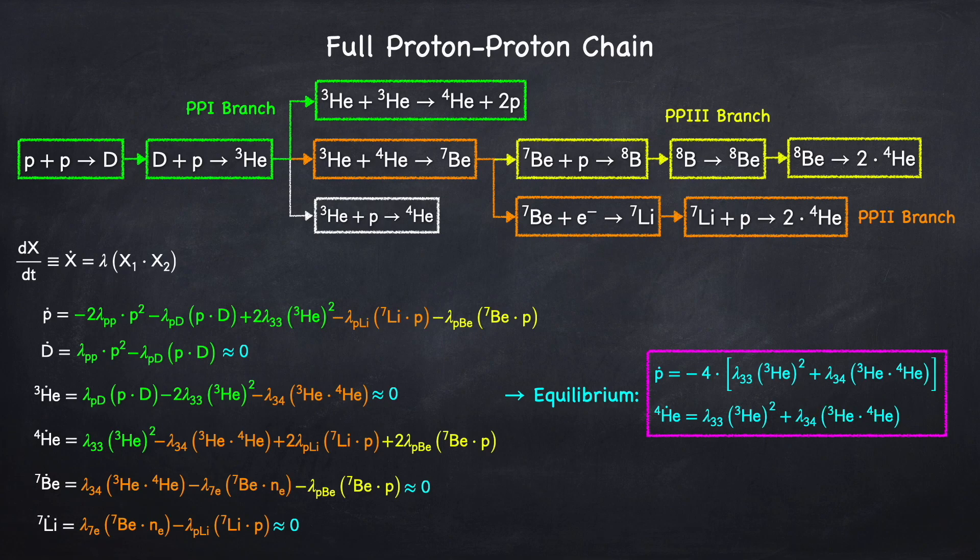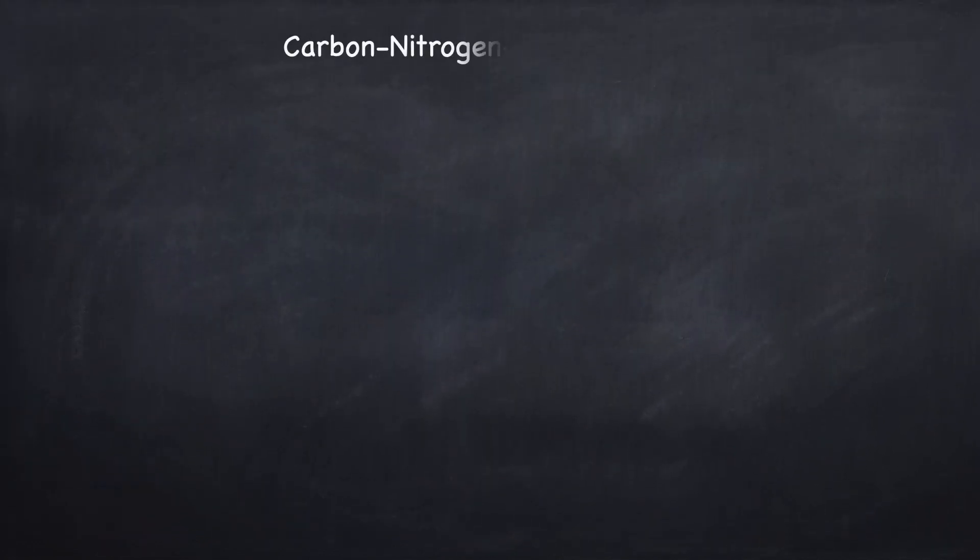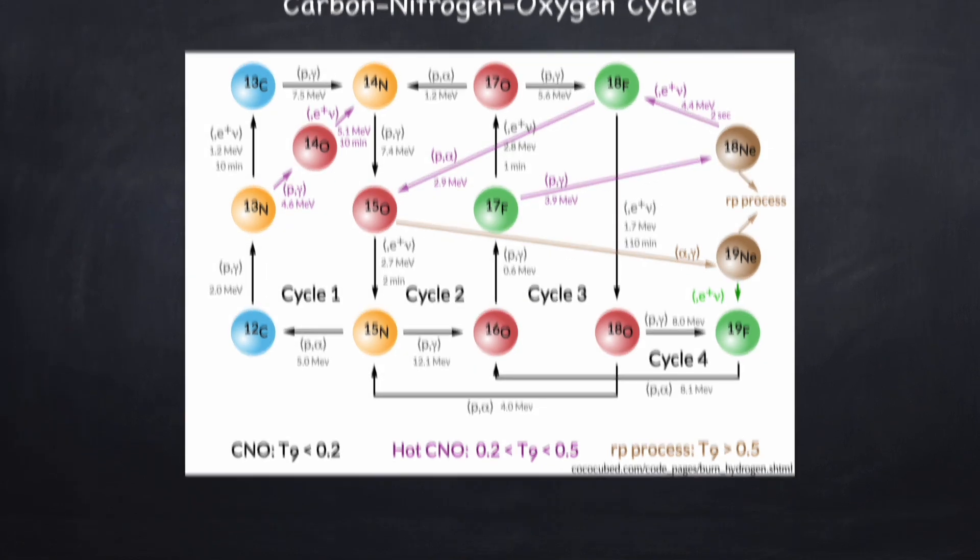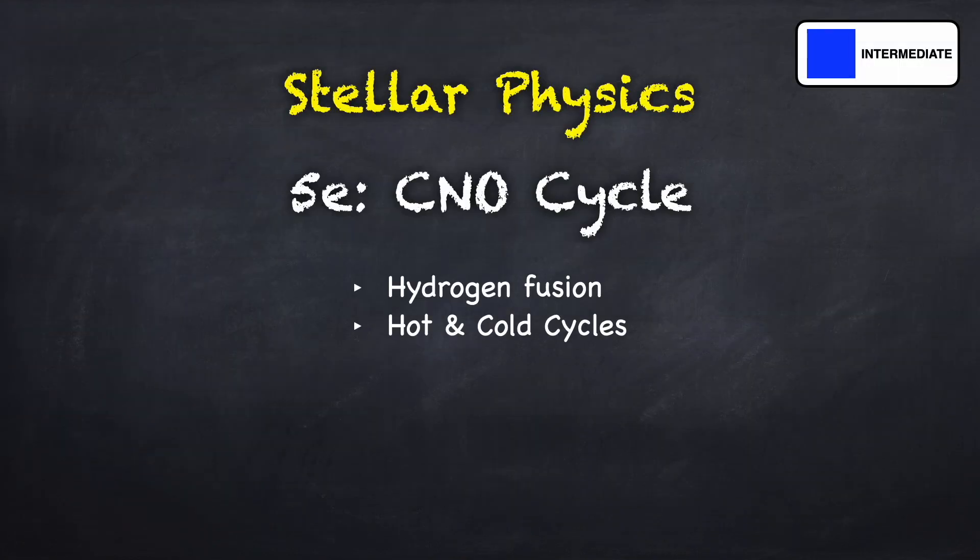So that's it. Now you know how to calculate the rates for the proton-proton chain. But it turns out the proton-proton chain is not the only way hydrogen can be fused into helium. For stars that are about one and a half times the size of the sun and smaller, they will burn on the proton-proton chain. But there's actually a second way in which hydrogen can fuse into helium, and that's called the CNO cycle, which stands for carbon-nitrogen-oxygen cycle. I also briefly went over this in Stellar Physics 1D, but we're going to go over it in detail in the next video. So if you found this video interesting and you'd like to see how the CNO cycle works, stay tuned for the next video. Be sure to like and subscribe and click the bell to be notified for future videos. Thanks for watching.